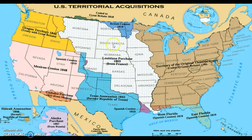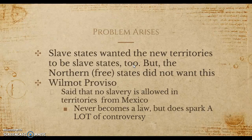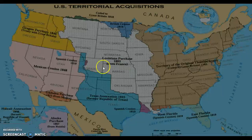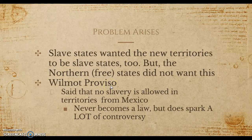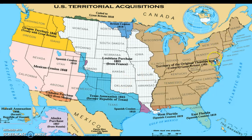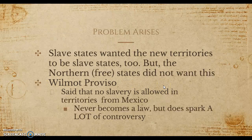Problems are going to arise, as they always do. The slave states — predominantly what we know as the South — wanted these new territories to be slave states as well. But because of sectionalism, the northern free states did not want this. The northern states did not want slavery extended into the new territories, while the southern states did, because of the balance of power. So there were going to be a bunch of different compromises and ideas proposed to solve this problem.